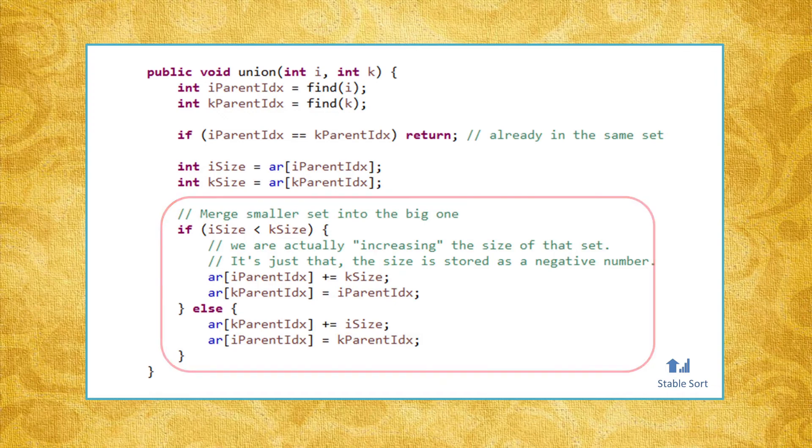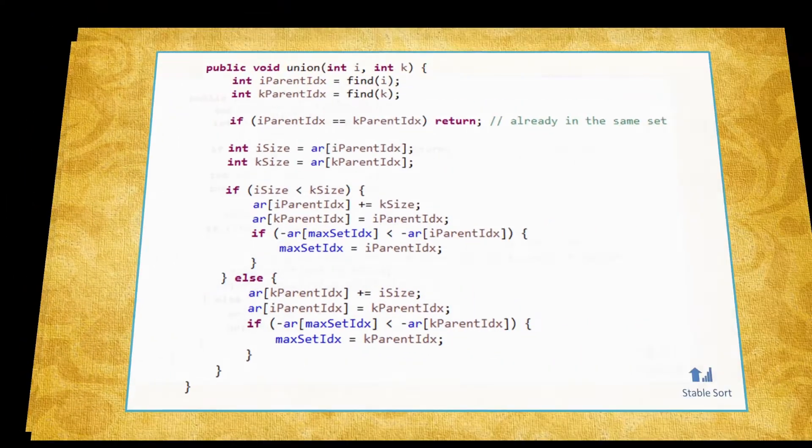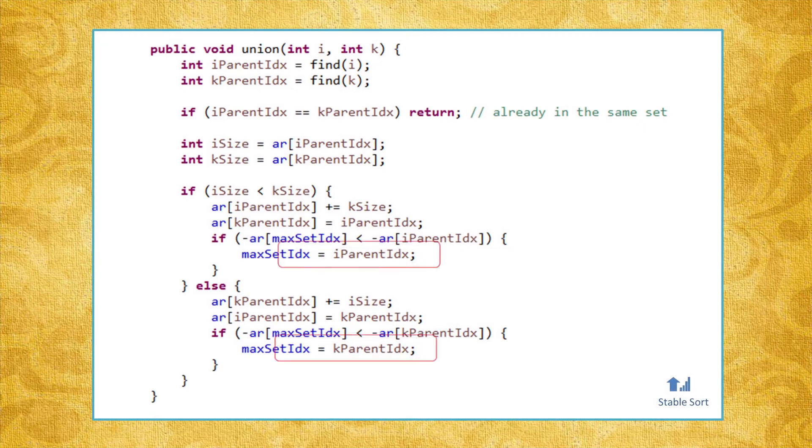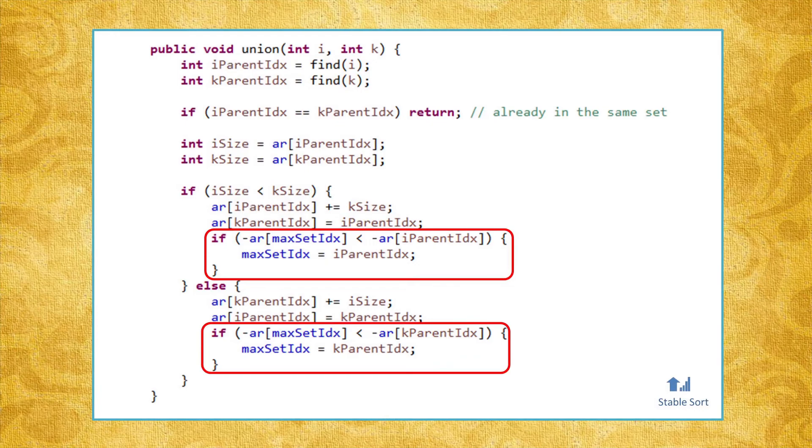Going back to our original problem, to be able to tell the size of the largest group in constant time, we modified the union method to use an additional variable that simply keeps track of the largest group seen so far.